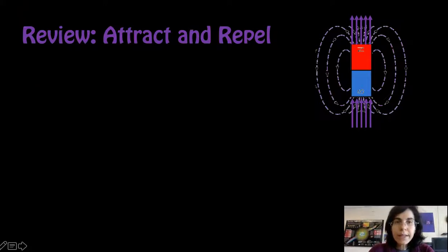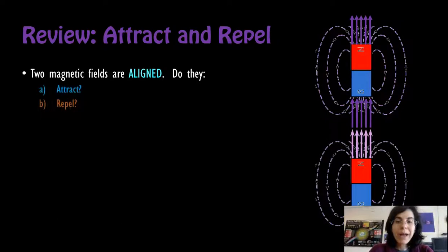To do this, we're going to use magnetic fields. Two magnetic fields are aligned. Do they attract or repel? Take a look. Draw a quick diagram and decide where is north, where is south. Is this a situation of attract or repel? Pause for 10 seconds while you do your work. Come to your conclusion and then press play.